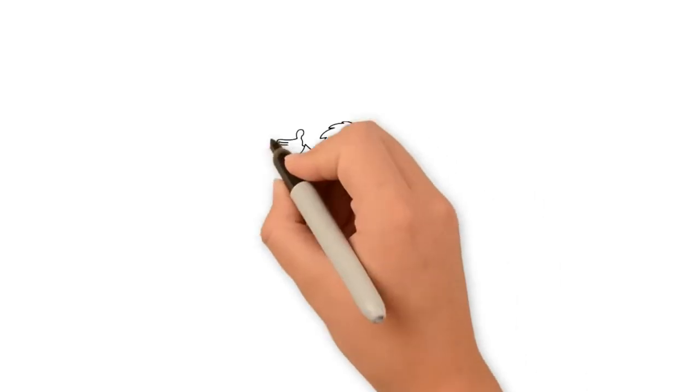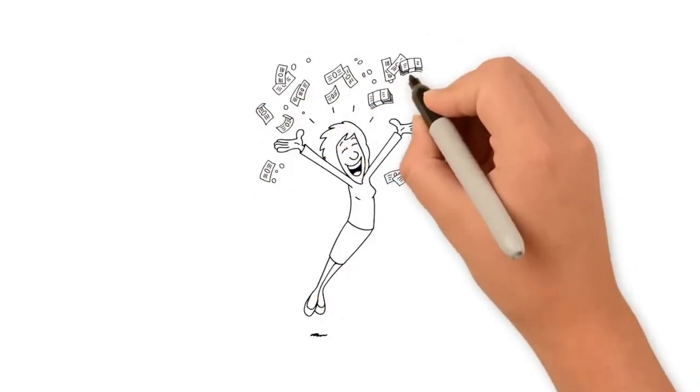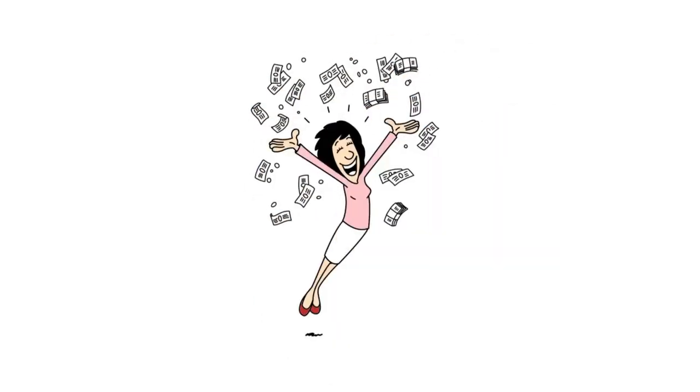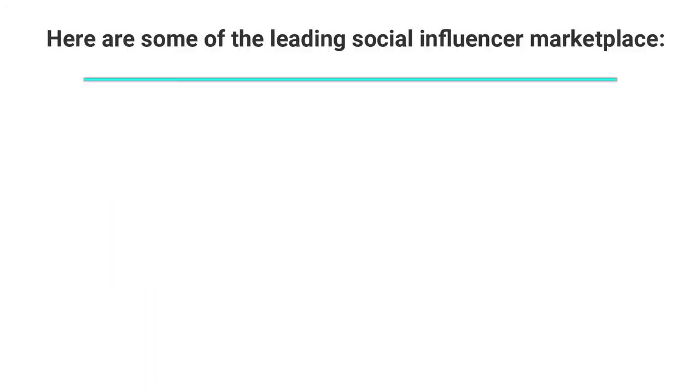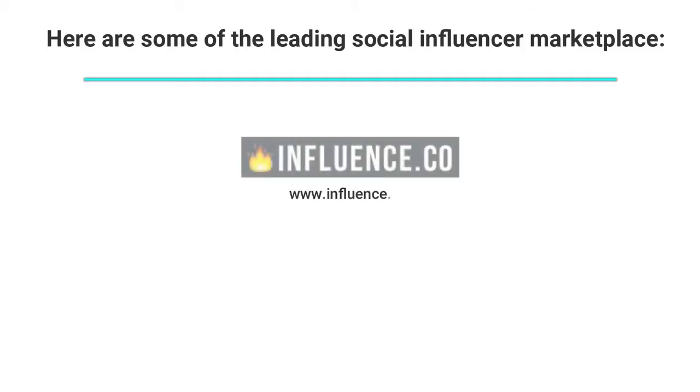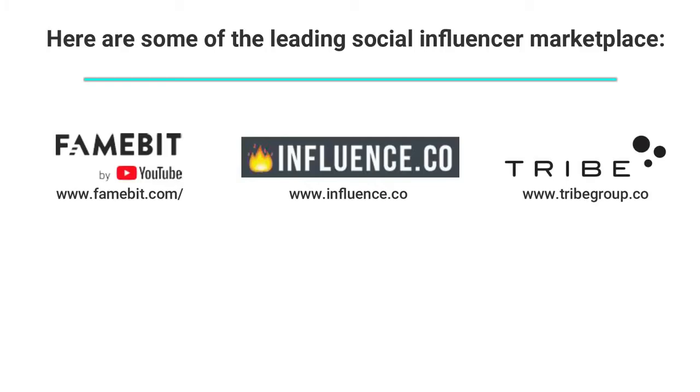Number five: joining social influencers. This is a trending new way to make money by showcasing your Instagram or YouTube profile to prospect advertisers. Here are some of the leading social influencer marketplaces: influence.co, famebit.com, tribegroup.co, shoutcart.com/page/start-selling, plughype.com.